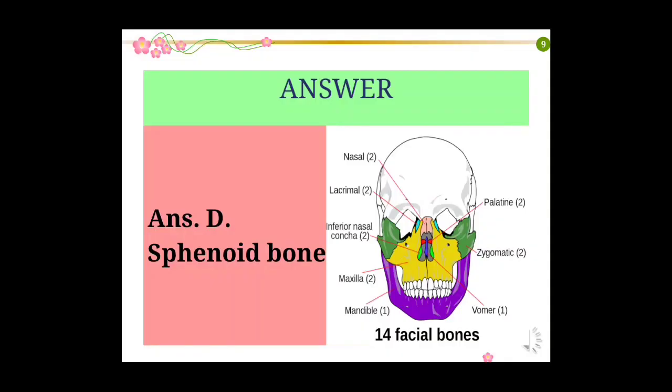Answer: Sphenoid bone. Sphenoid bone is not a facial bone, it is a cranial bone. Facial skeleton consists of 2 nasal bones, 2 lacrimal bones, 2 inferior nasal conchae, 2 maxillae, 1 mandible, 1 vomer, 2 zygomatic bones and 2 palatine bones.